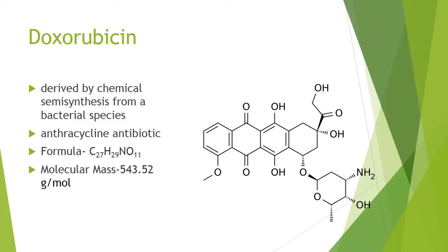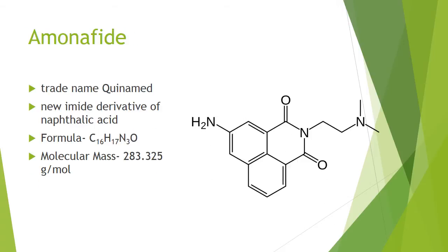The first cancer drug is doxorubicin. It is derived by chemical semisynthesis from a bacterial species. It is an anthracycline antibiotic and the trade name is Adriamycin. Amanofire-3 is a new carboxamide derivative of naphthalacridine, and its trade name is Sainamide.